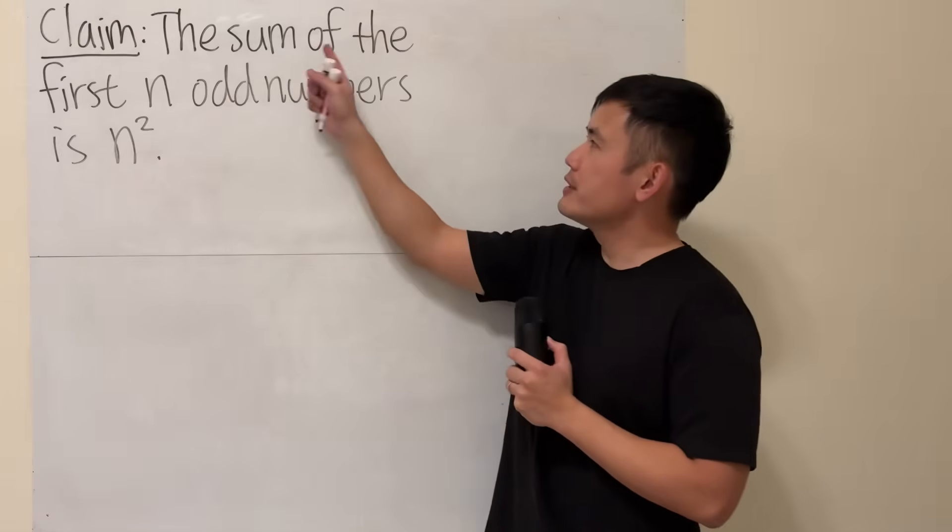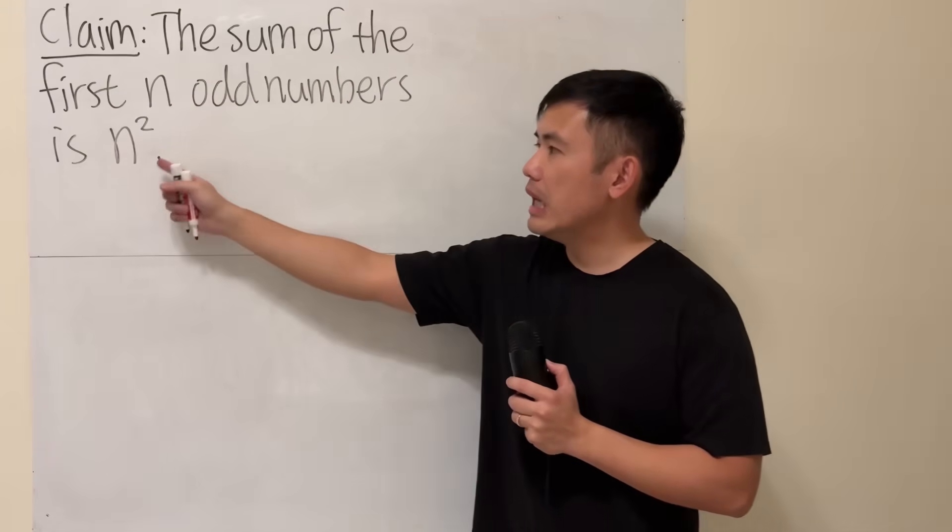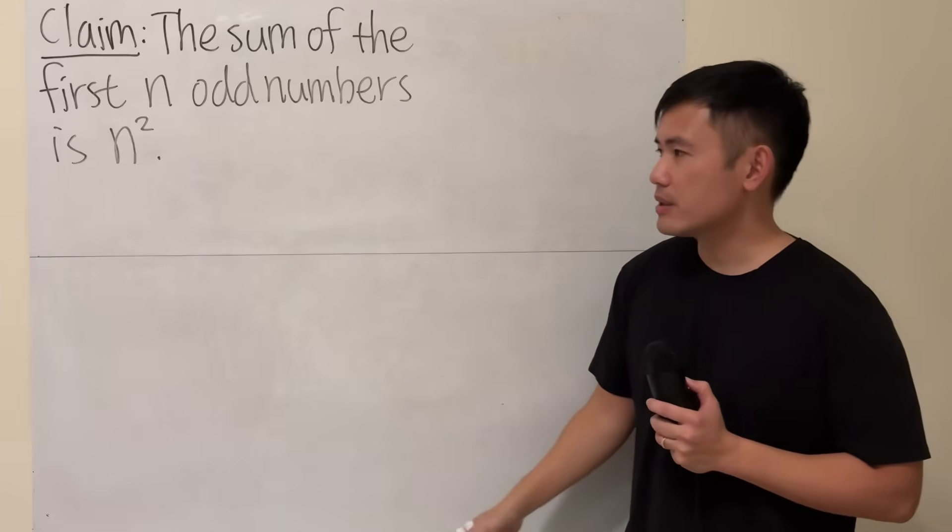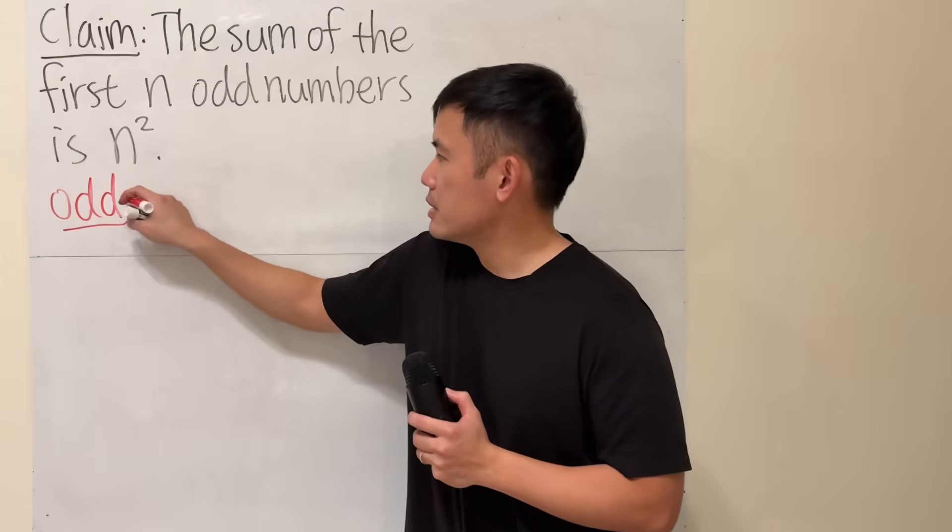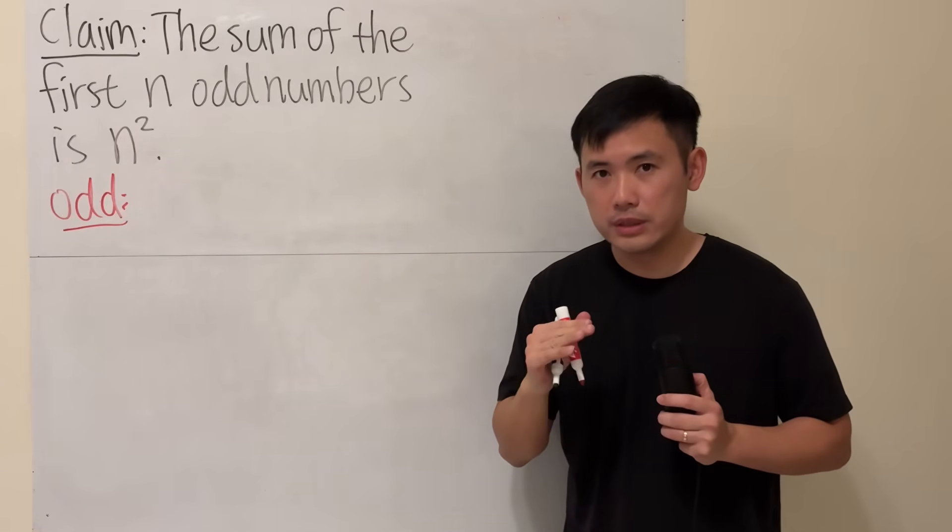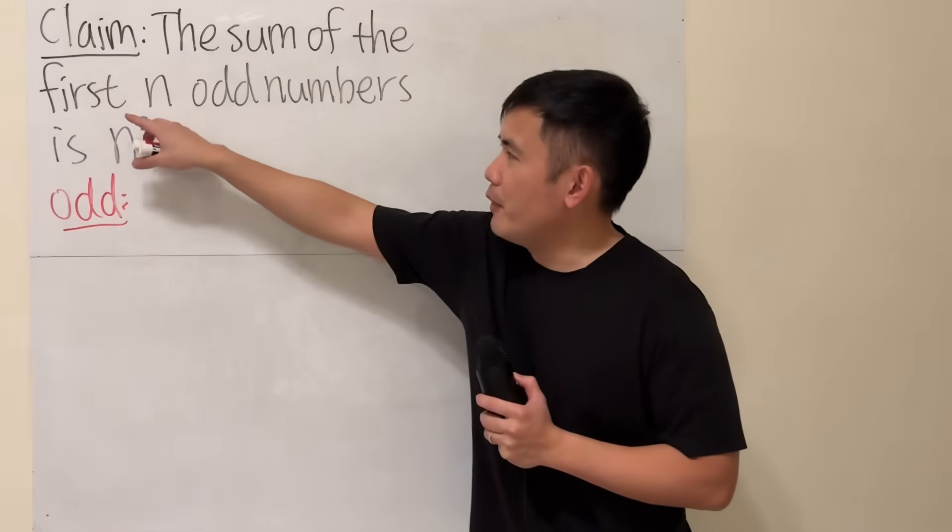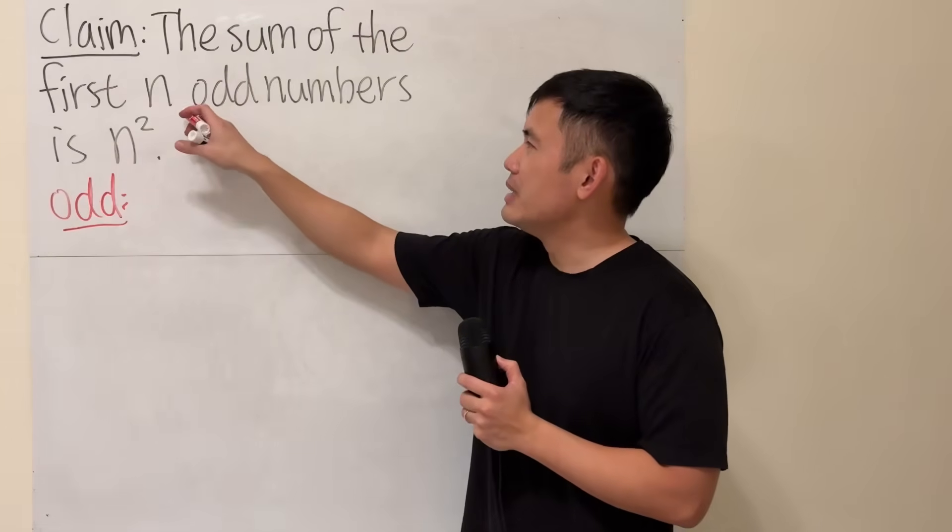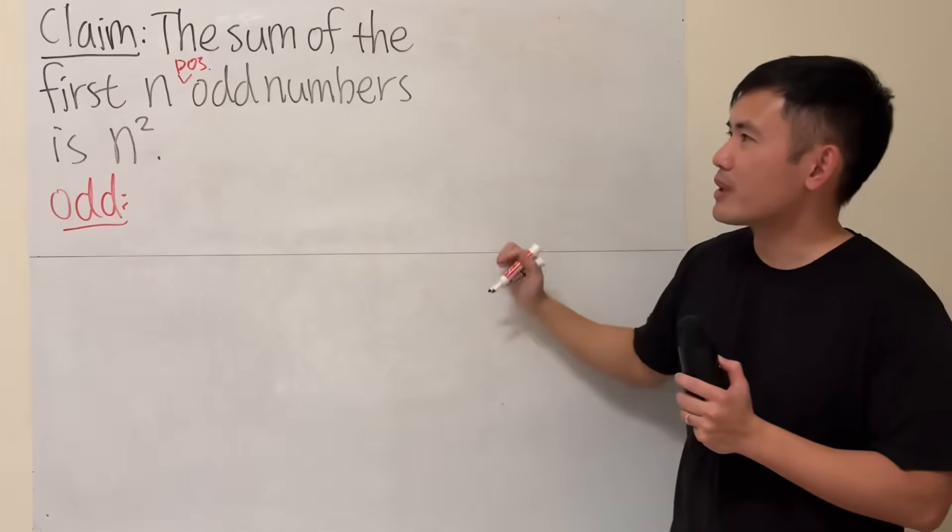So the claim is, the sum of the first n odd numbers is n squared. So what do we really mean though? Well check this out. So here, these are the odd numbers. When we're talking about odd or even numbers, we are just dealing with whole numbers only. And when we're talking about the first, we start with the positive. So technically you should mention n positive, maybe just a small attachment to make it more clear.